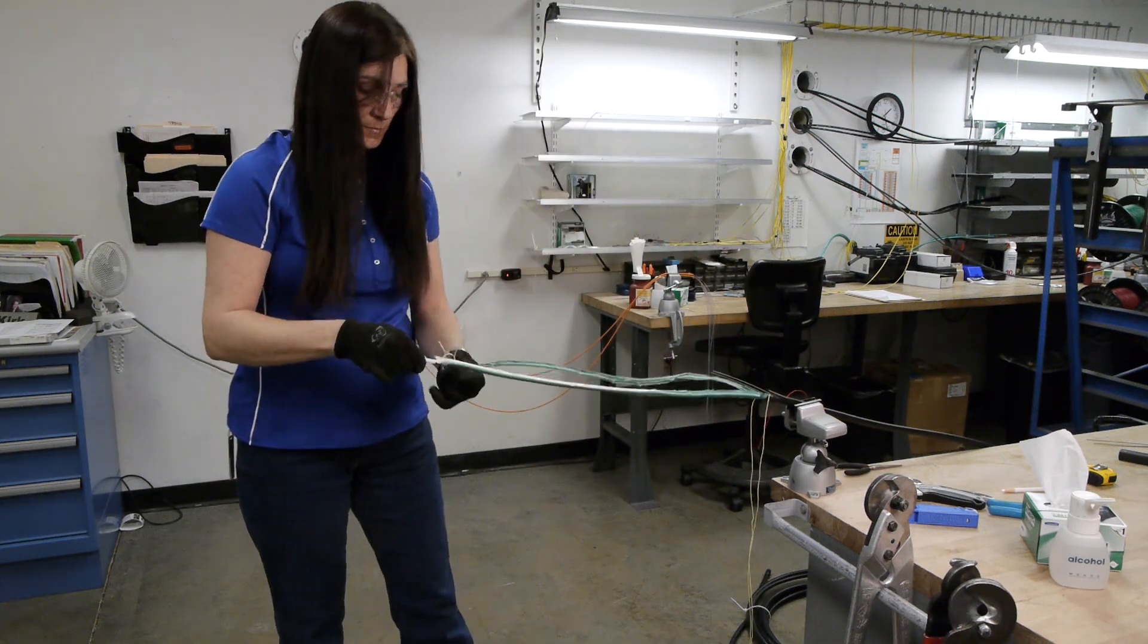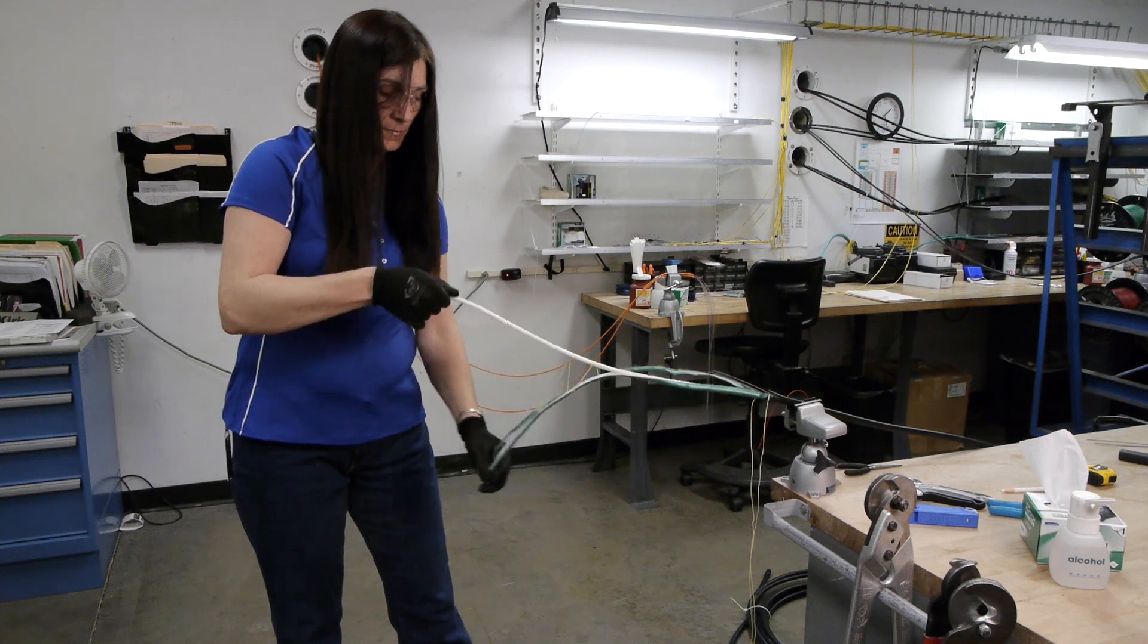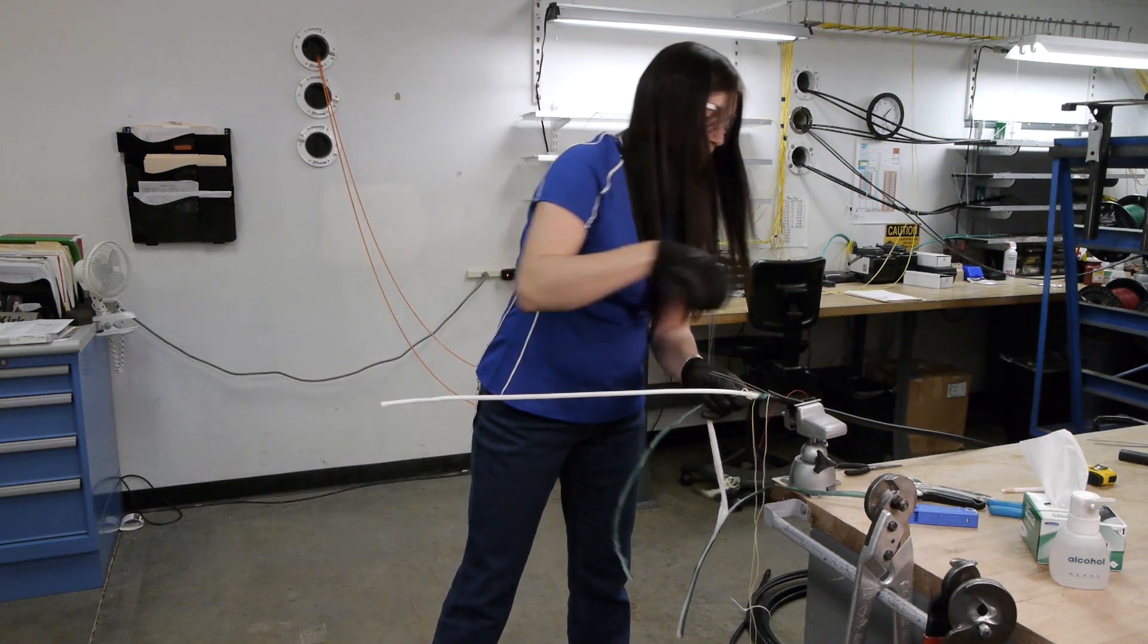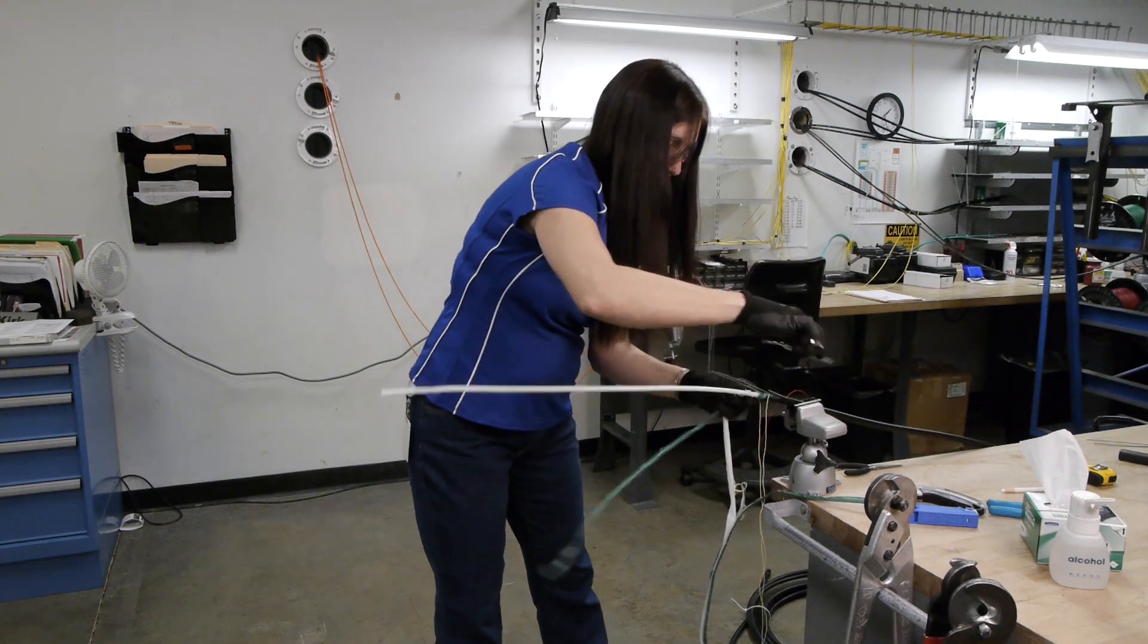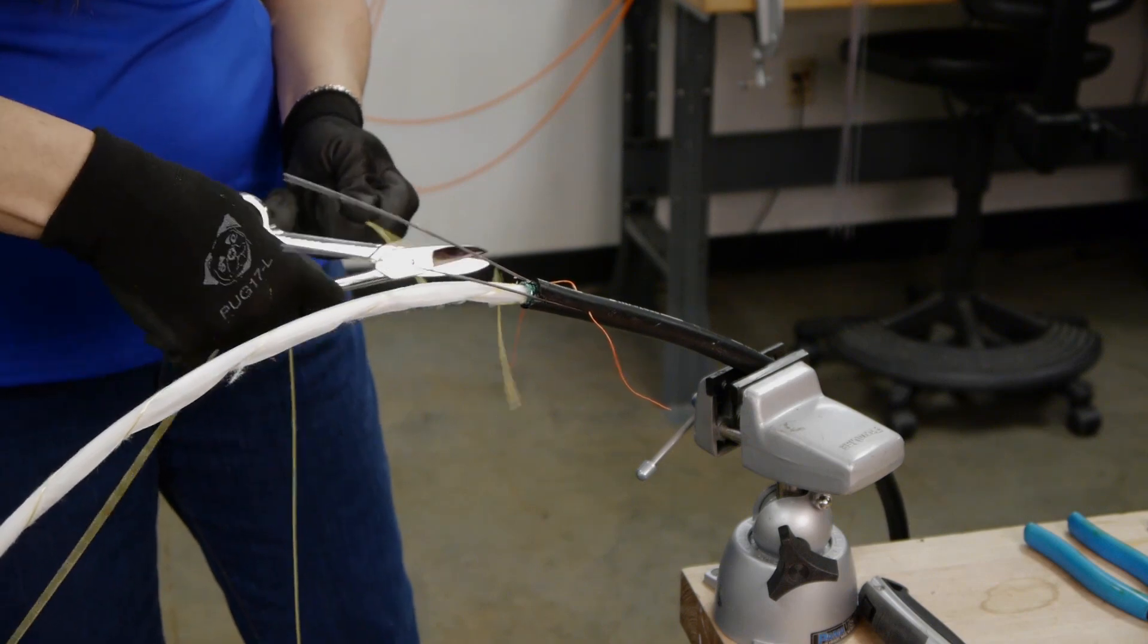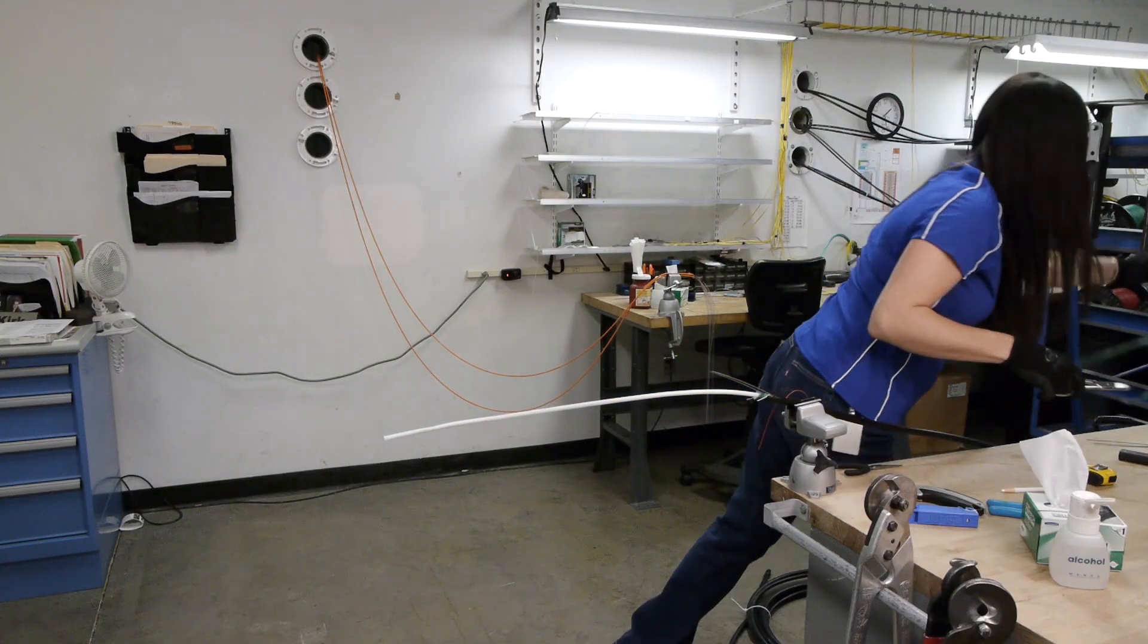Remove armor and cut off dry water blocking yarns and material. Cut and leave several inches of rip cord for bond clamp installation.